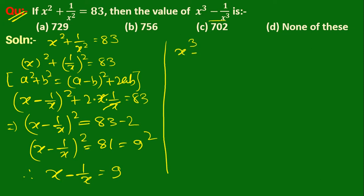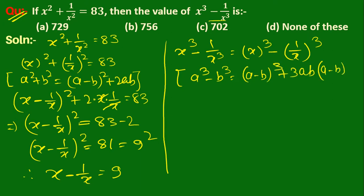Now we need to find x³ - 1/x³. We use the identity a³ - b³ = (a - b)³ + 3ab(a - b). Applying this: (x - 1/x)³ + 3·x·(1/x)·(x - 1/x).